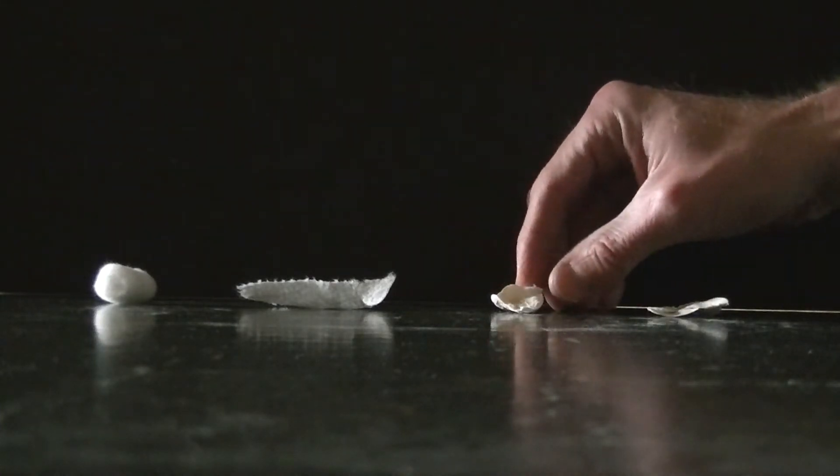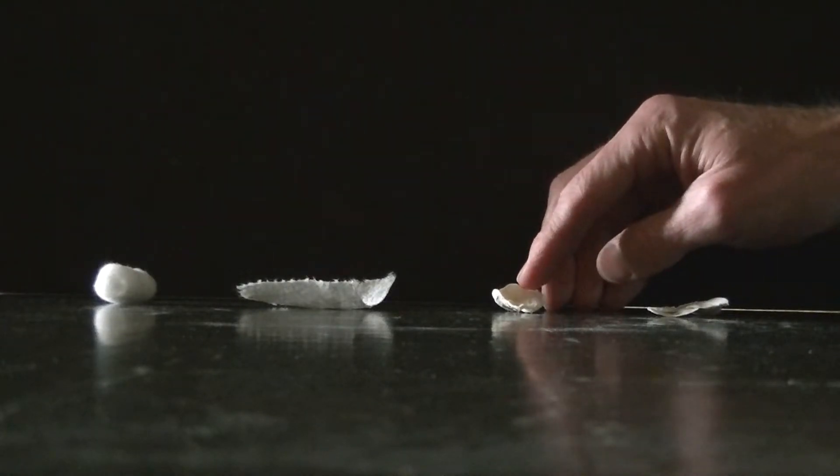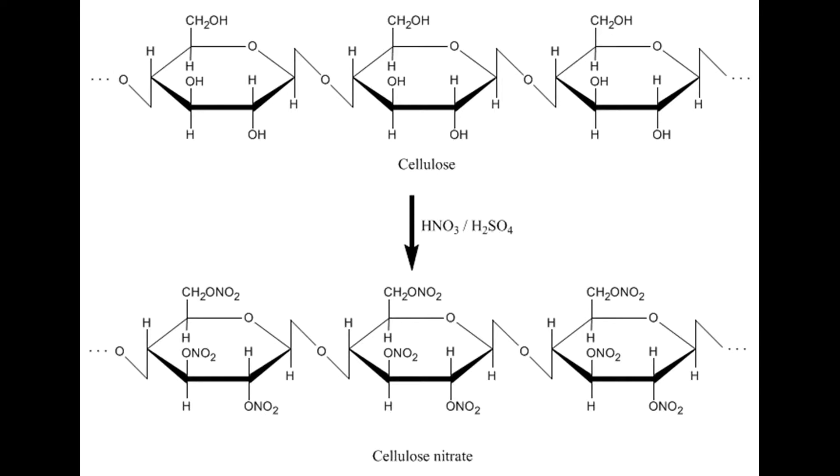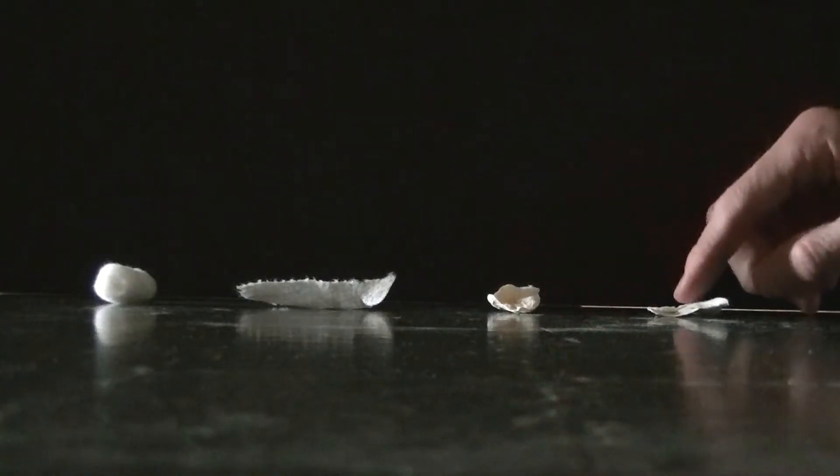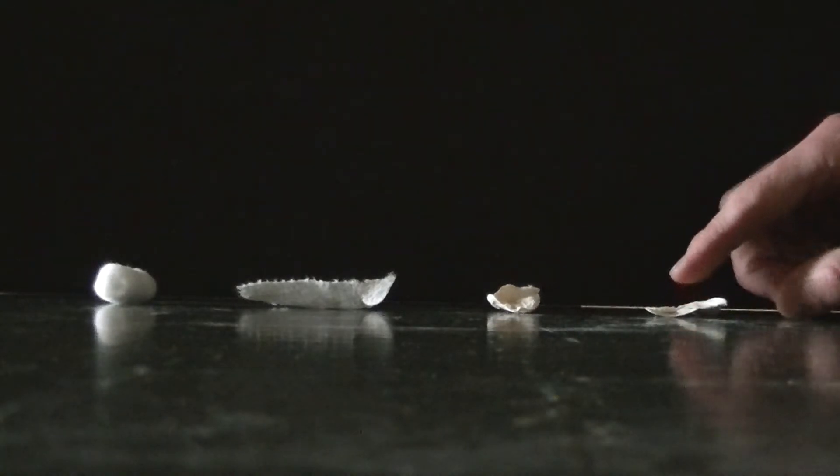And what has gone on there is the cellulose in the cotton has been nitrated. This is a paper towel that has also been nitrated through that chemical procedure.